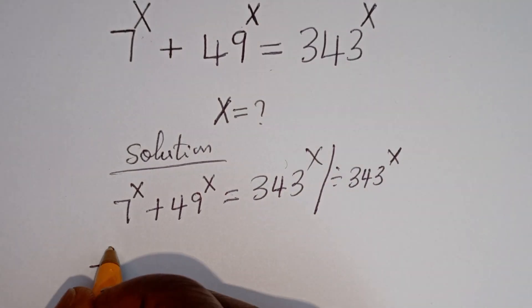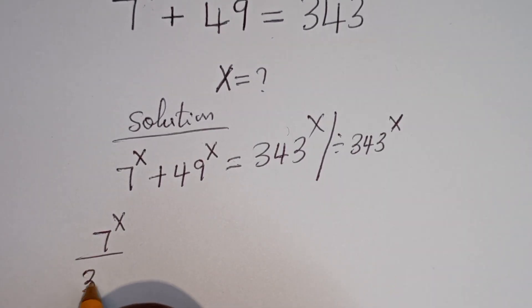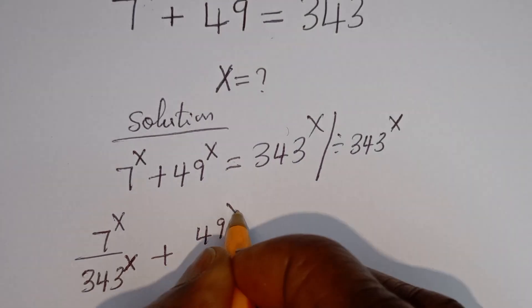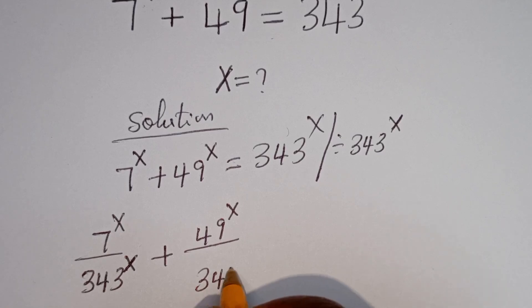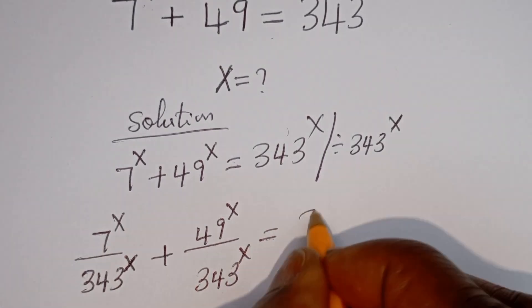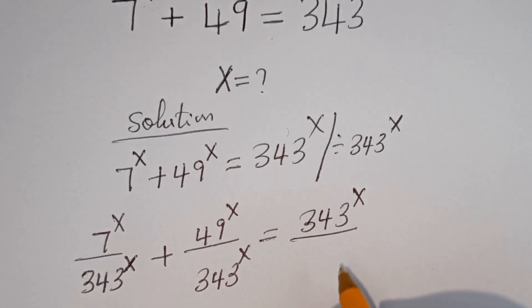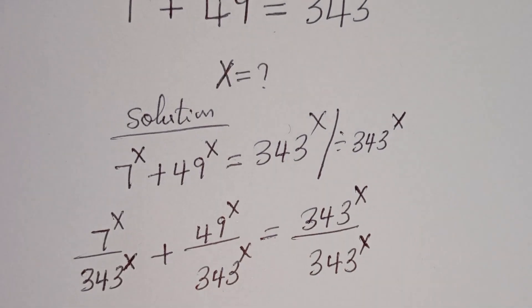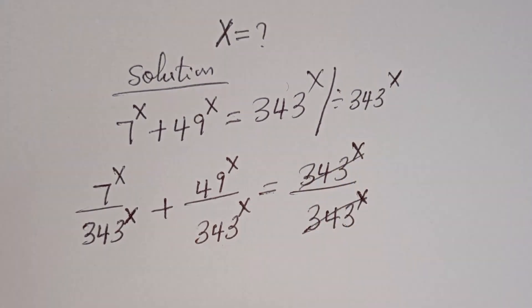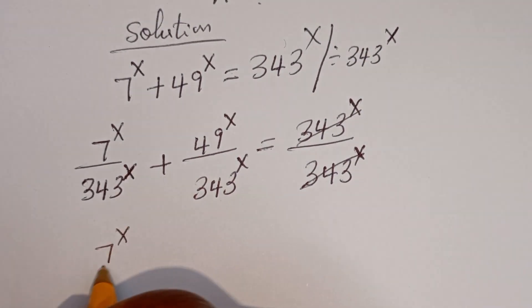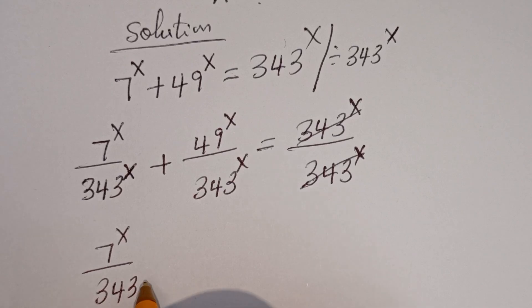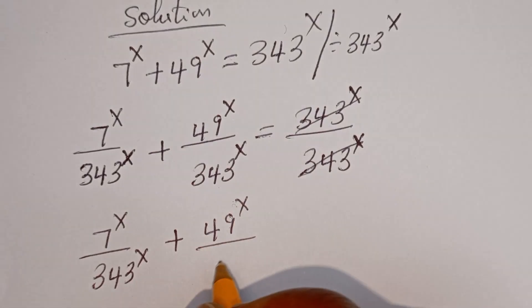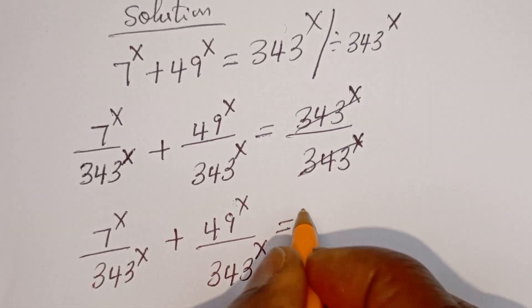Then we have 7 to the power of S divided by 343 to the power of S, plus 49 to the power of X divided by 343 to the power of S, is equal to 1.